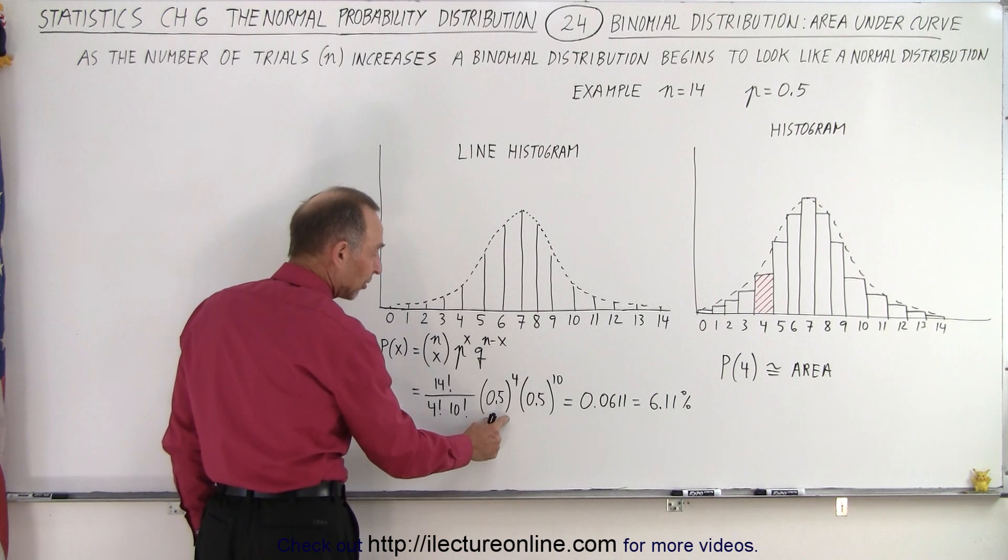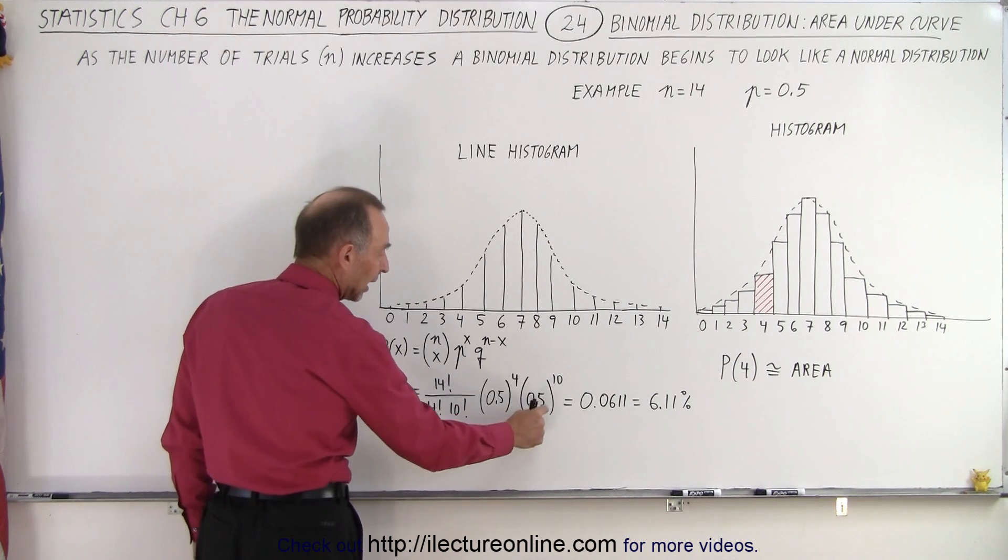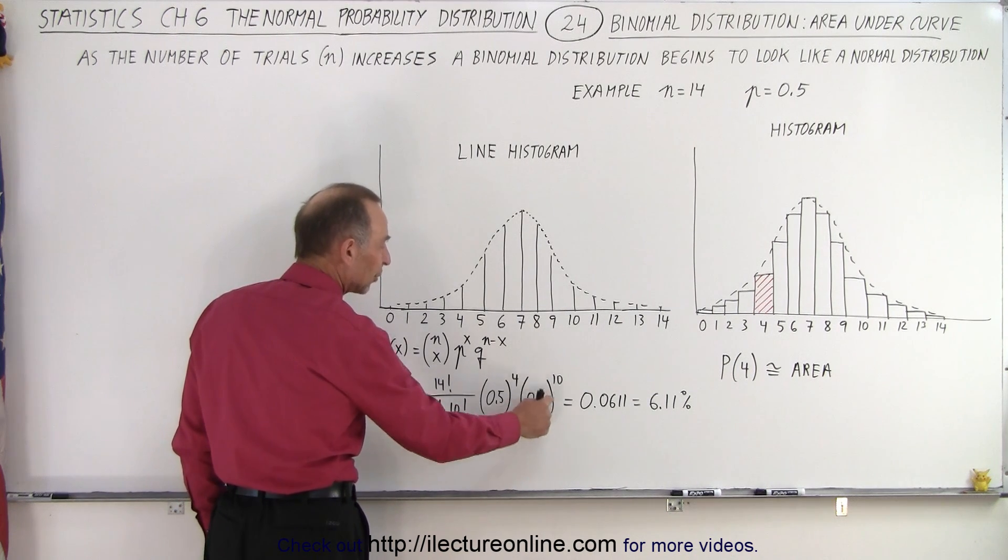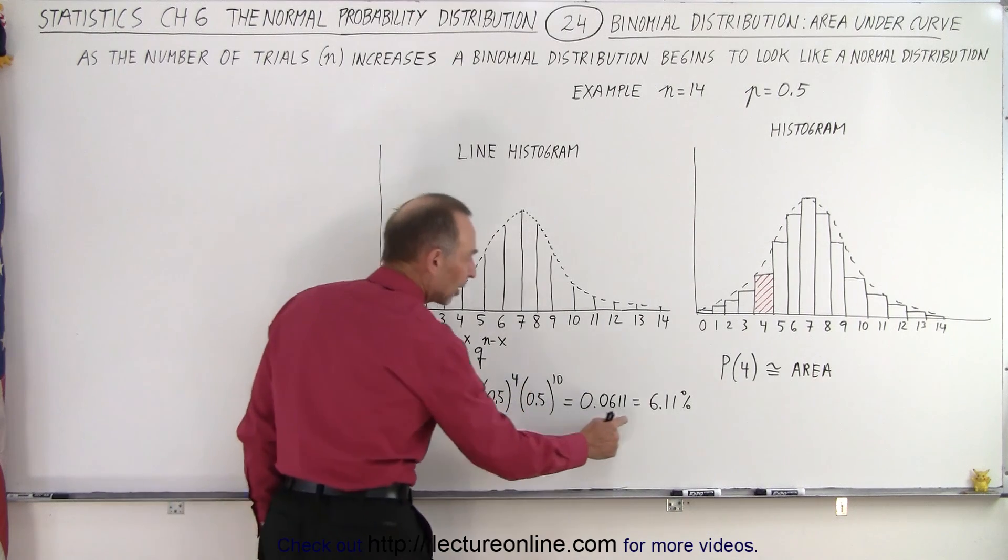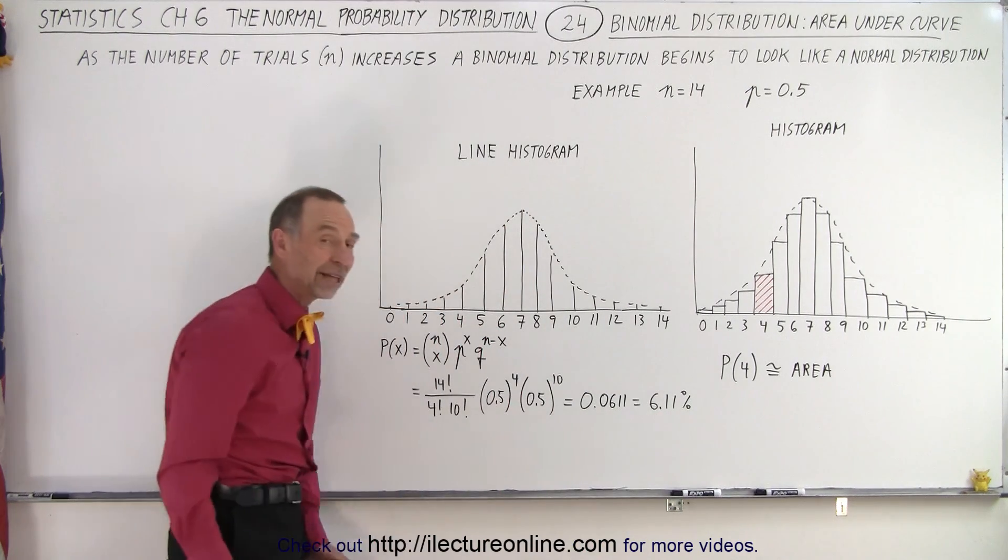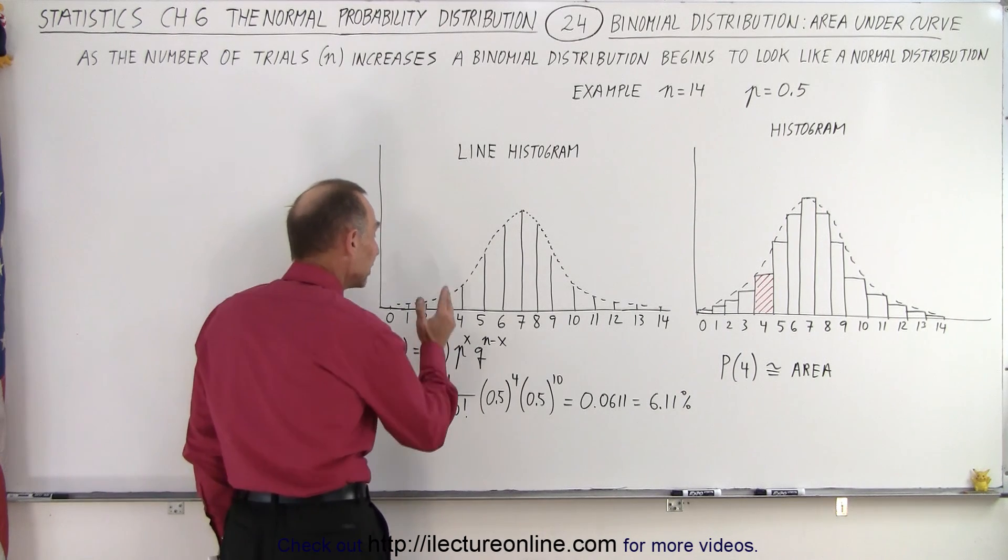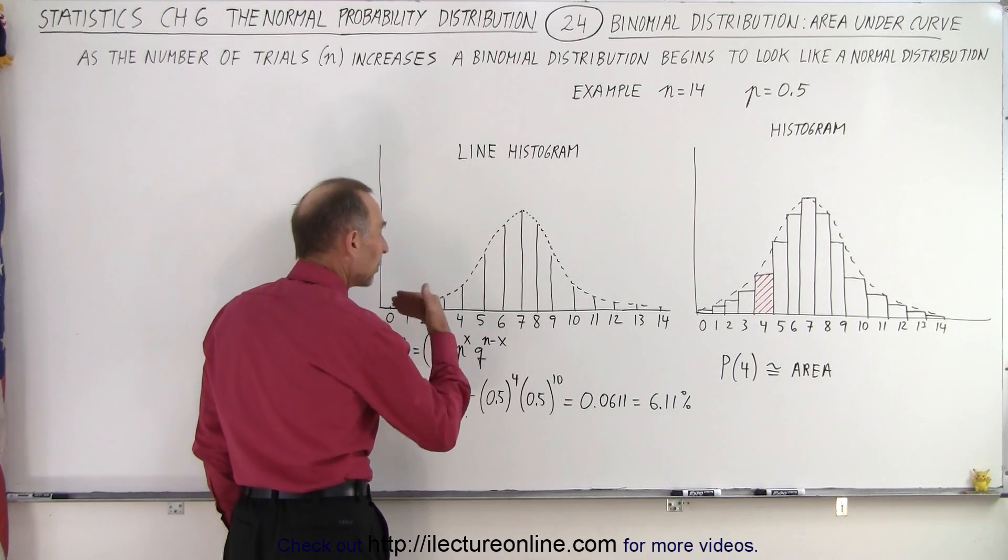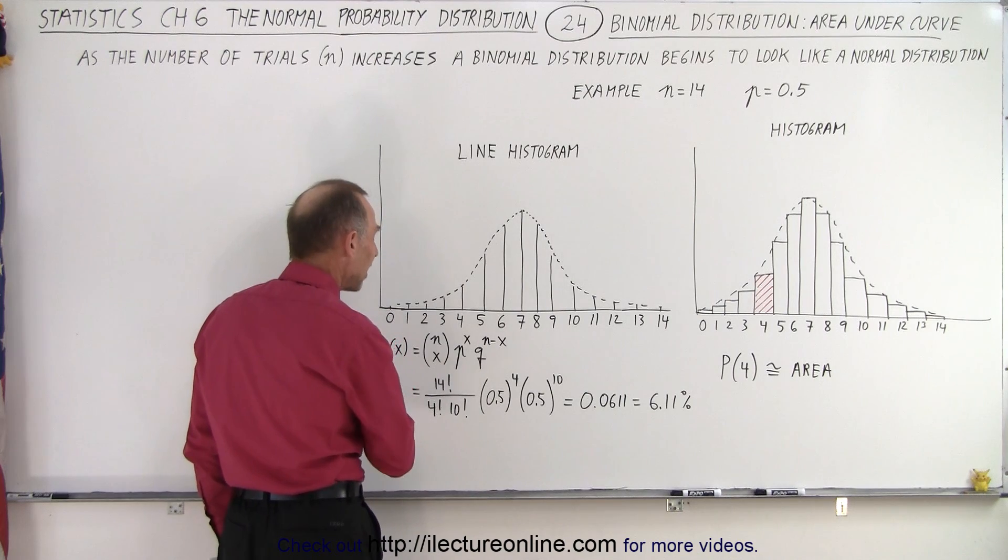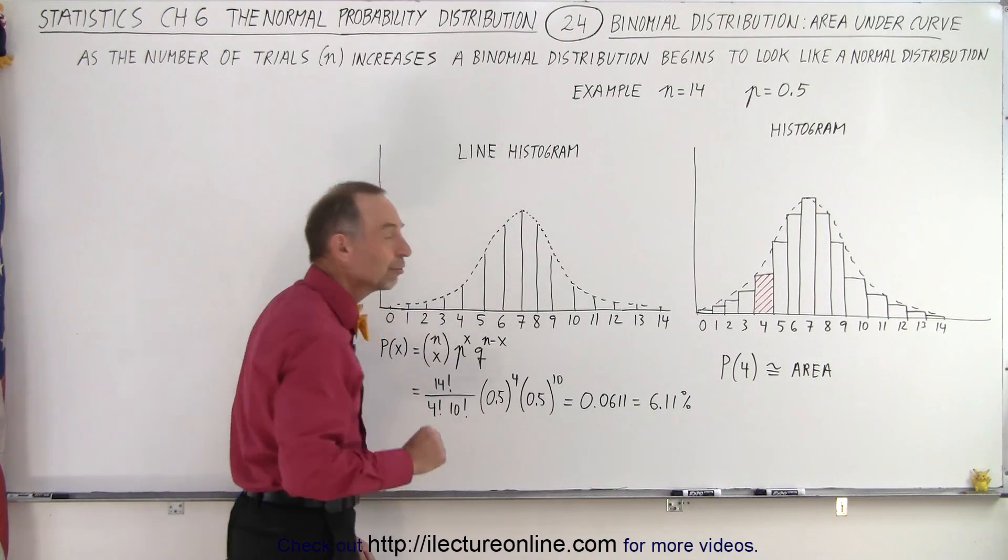0.5 is the probability of success raised to the 4th power, and 0.5 is the probability of failure raised to the 10th power. This comes out to be 6.11%. So there's a little over 6% probability that the outcome will be 4 when the probability of success is 0.5 and the number of trials is 14.